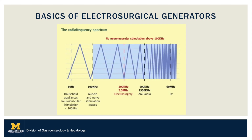The frequency at which the alternating current is run dictates the effect on the tissue. Typical frequencies for endoscopic electrosurgical generators are between 200 kilohertz and 3.3 megahertz. Frequencies below 100 kilohertz cause neuromuscular stimulation and are well below what is used in endoscopy.